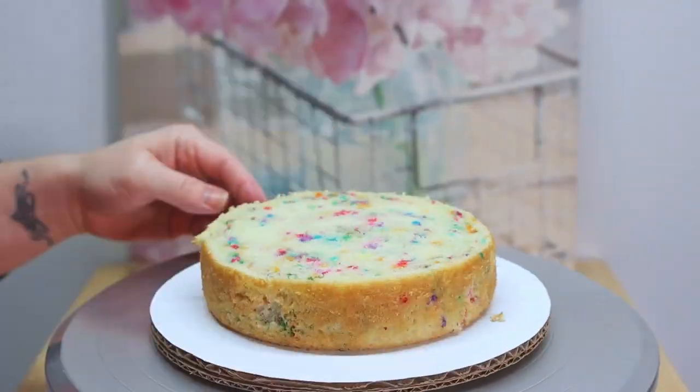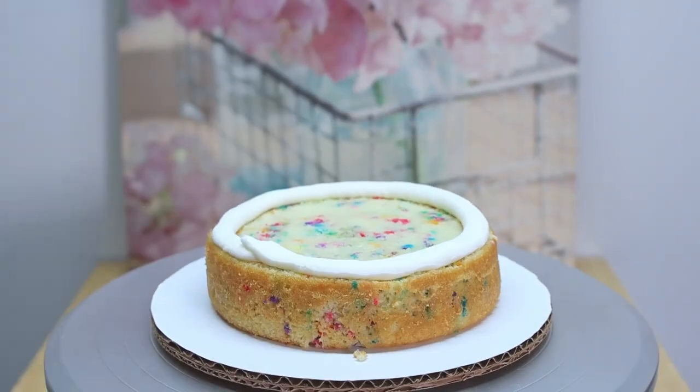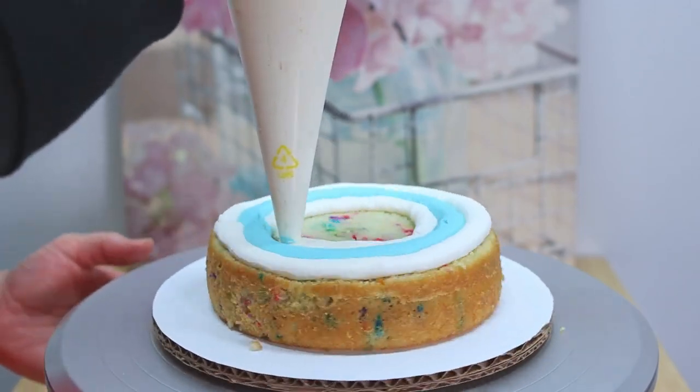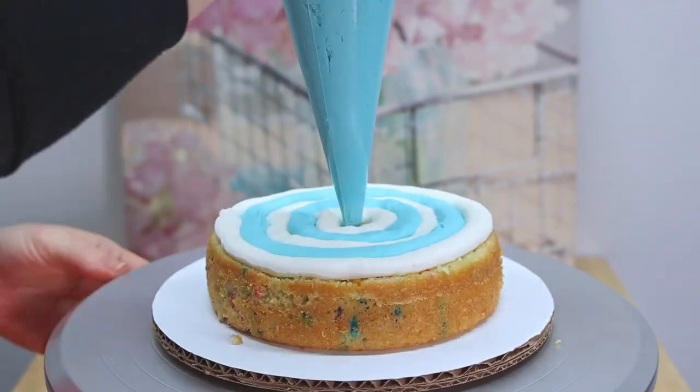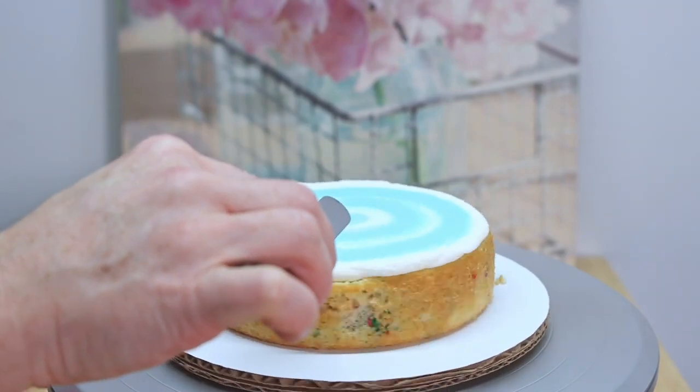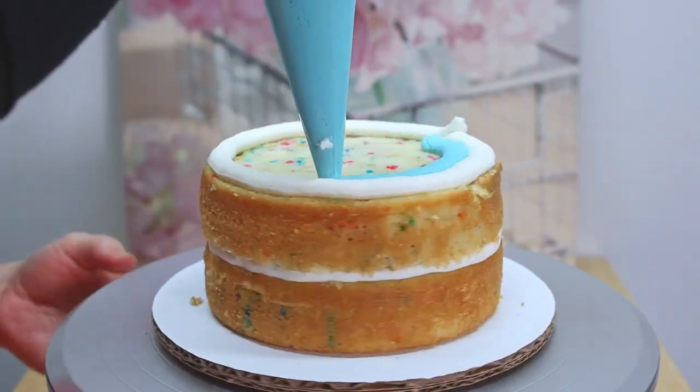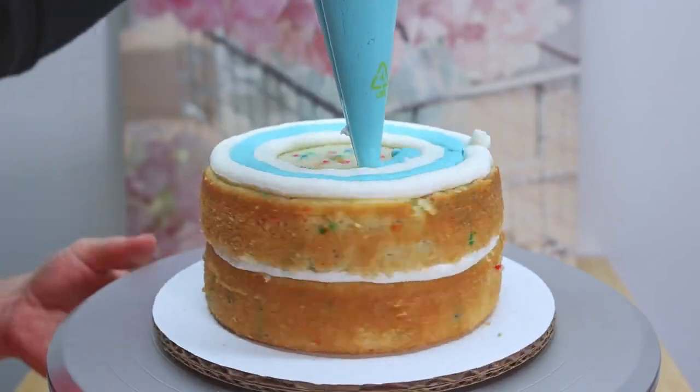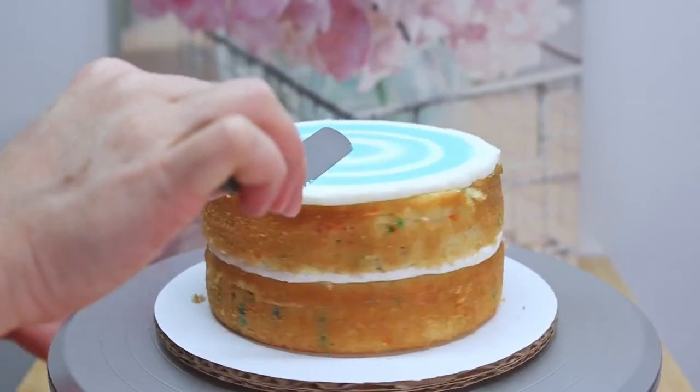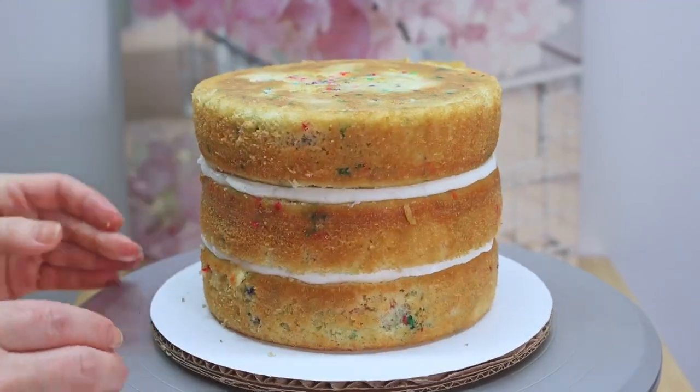So beginning with an 8 inch cake board, we're just going to add a dab of our buttercream for that first layer of cake to stick to. And then we're going to add some fun festive stripes with some blue and some white buttercream. And don't forget to smooth each of these layers before adding the next layer of cake so you don't end up with any air bubbles trapped in between.